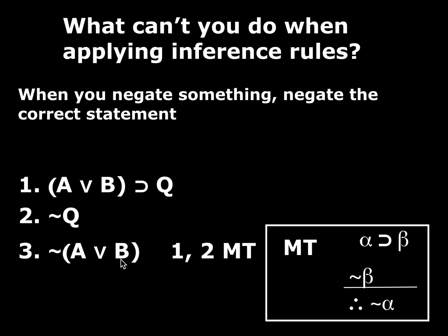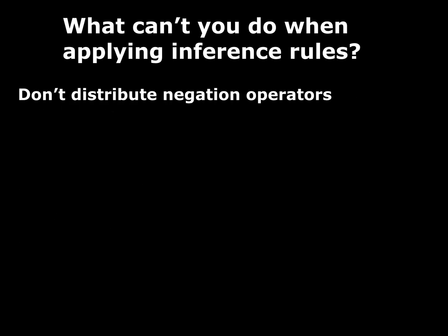What it should look like is this: the negated disjunction. The disjunction is the antecedent, so the whole disjunction needs to be negated. So when you're negating a statement, make sure you're negating the right statement.